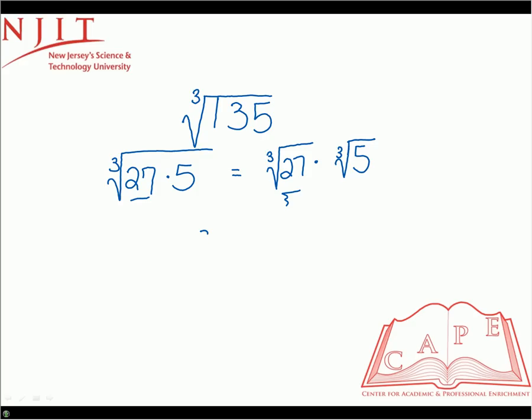So this simplifies to be 3 times the cube root of 5. And then because the 3 is just a constant, you can just multiply it in front without having to incorporate a multiplication sign. So our final answer is just expressed as 3 cube root of 5. Let's do another one.